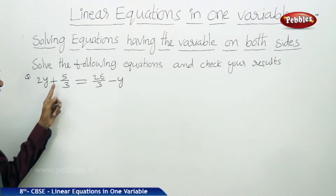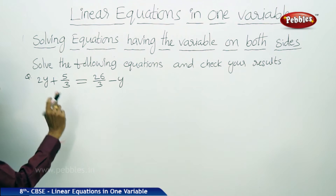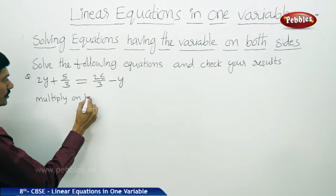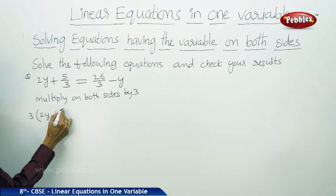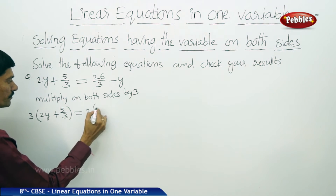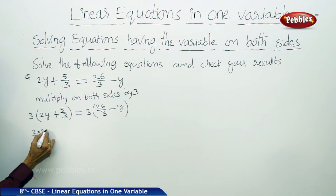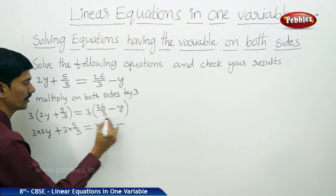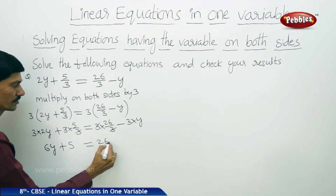The next equation is 2y plus 5 by 3 equals to 26 by 3 minus y. We find the LCM of denominators 3 and 3, which is 3. Multiplying both sides by 3: 3 into 2y plus 3 into 5 by 3 equals 3 into 26 by 3 minus 3 into y. The 3s cancel, giving 6y plus 5 equals 26 minus 3y.